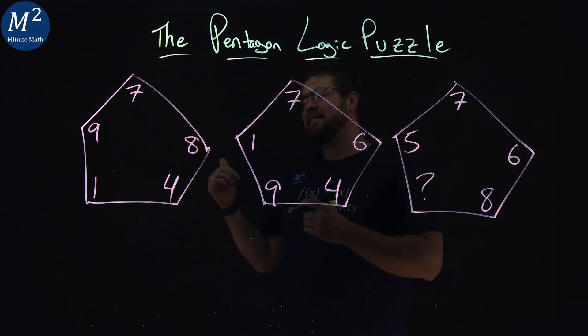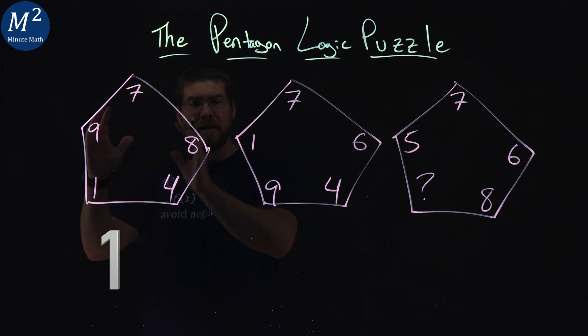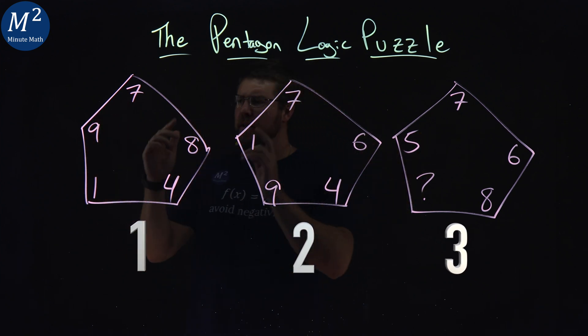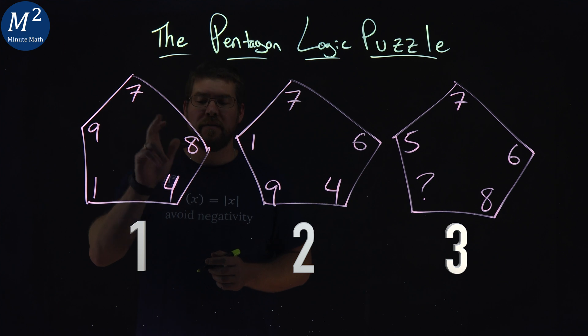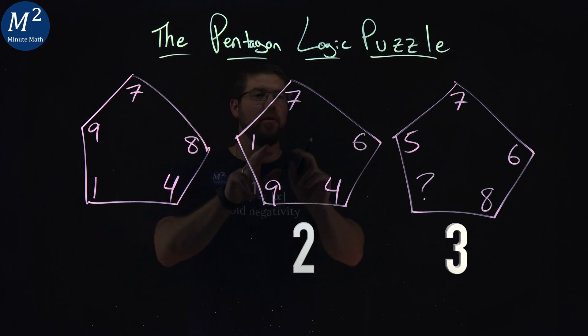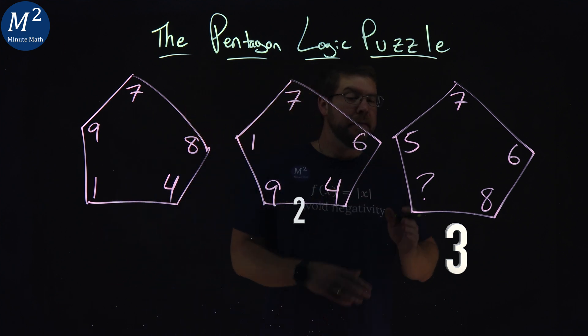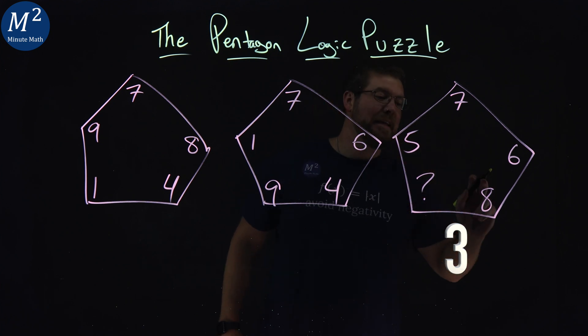The puzzle is this. We have one pentagon, two pentagons, and three pentagons. The numbers inside are 1, 9, 7, 8, 4. The second one, 9, 1, 7, 6, 4. We don't know what this one is, but the other ones are 5, 7, 6, and 8.